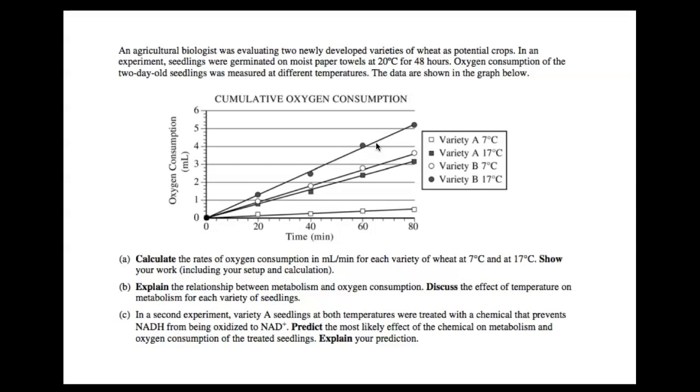Alright, Part B says explain the relationship between metabolism and oxygen consumption and discuss the effects of temperature. Well, it looks like between variety A—you have squares—and variety B—you have circles—it appears to me that as temperature increases, oxygen consumption increases. So there's this lab that I do every year. This year I decided not to do it just because I was feeling a little paranoid. But I do this lab, and lots of AP biology teachers do this lab. I just felt like I just couldn't get away with it this year. We take goldfish, and we very, very gently increase the temperature of the water, and then we very, very gently decrease the temperature of the water.